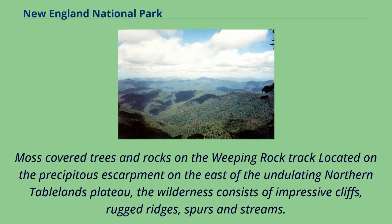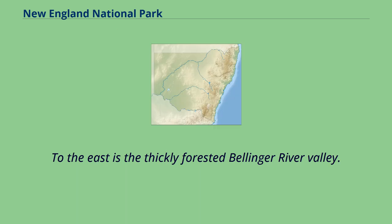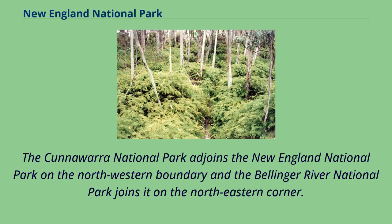Moss-covered trees and rocks on the Weeping Rock Track are located on the precipitous escarpment on the east of the undulating Northern Tablelands plateau. The wilderness consists of impressive cliffs, rugged ridges, spurs and streams. To the west, the Nimboida, Guy Fawkes and Styx rivers drain across the Tablelands. To the east is the thickly forested Bellinger River Valley. The Kunawara National Park adjoins the New England National Park on the northwestern boundary and the Bellinger River National Park joins it on the northeastern corner.